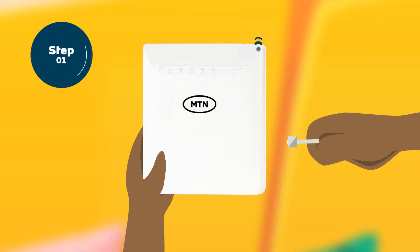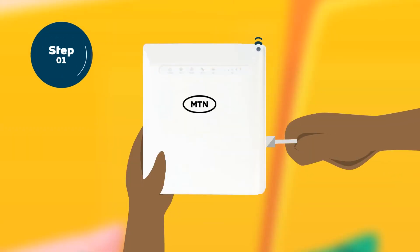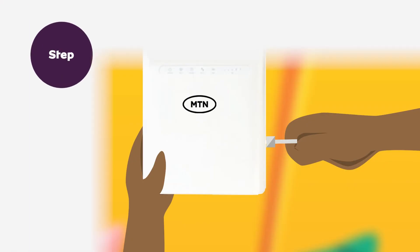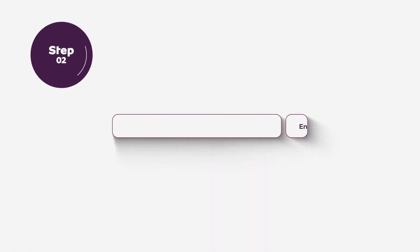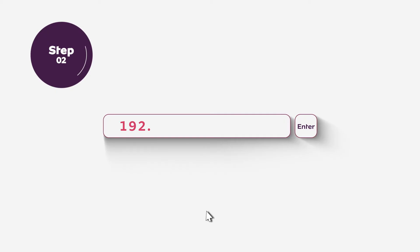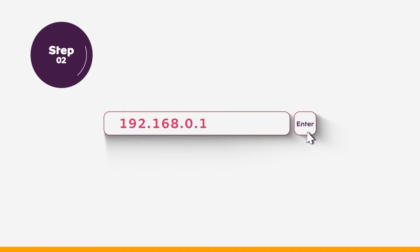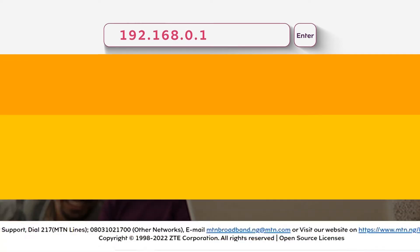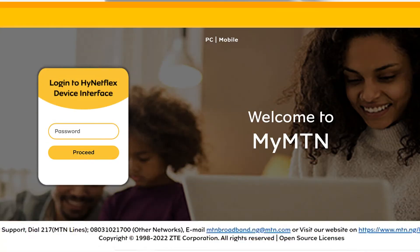Step 1: Connect your broadband router through Wi-Fi or LAN cable. Step 2: Open your web browser and type in 192.168.0.1 in the address bar and click Enter.